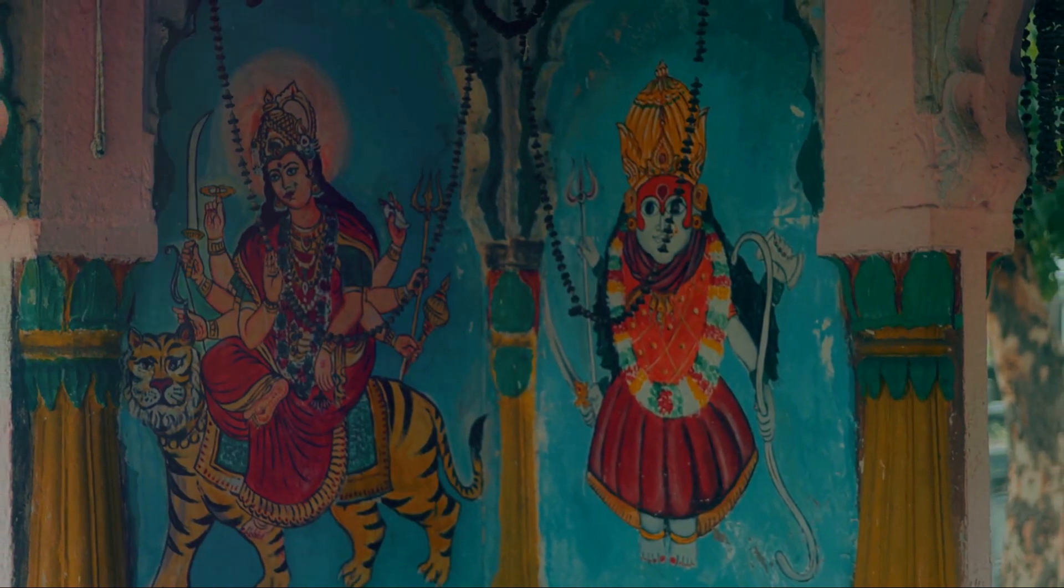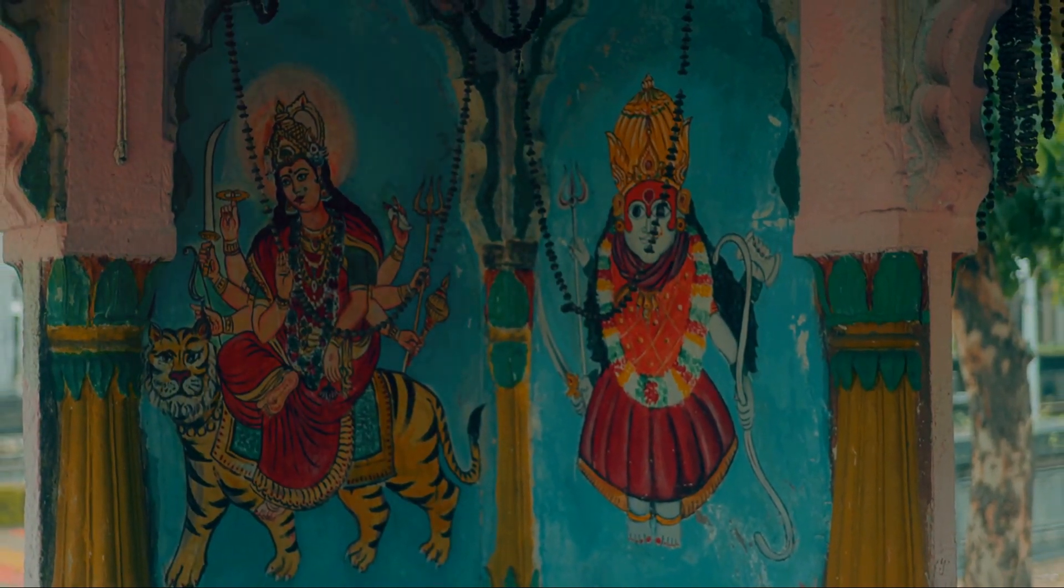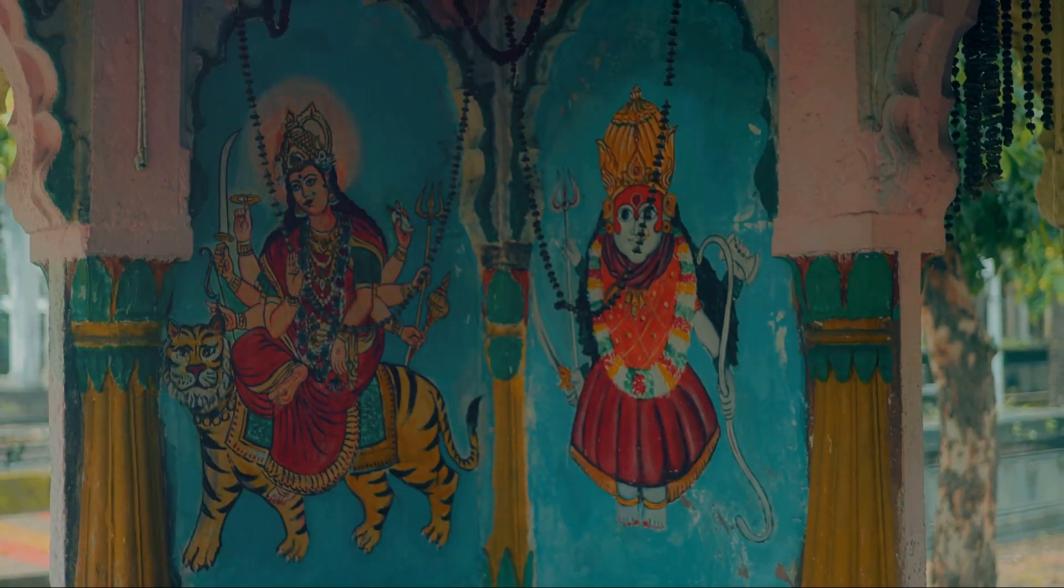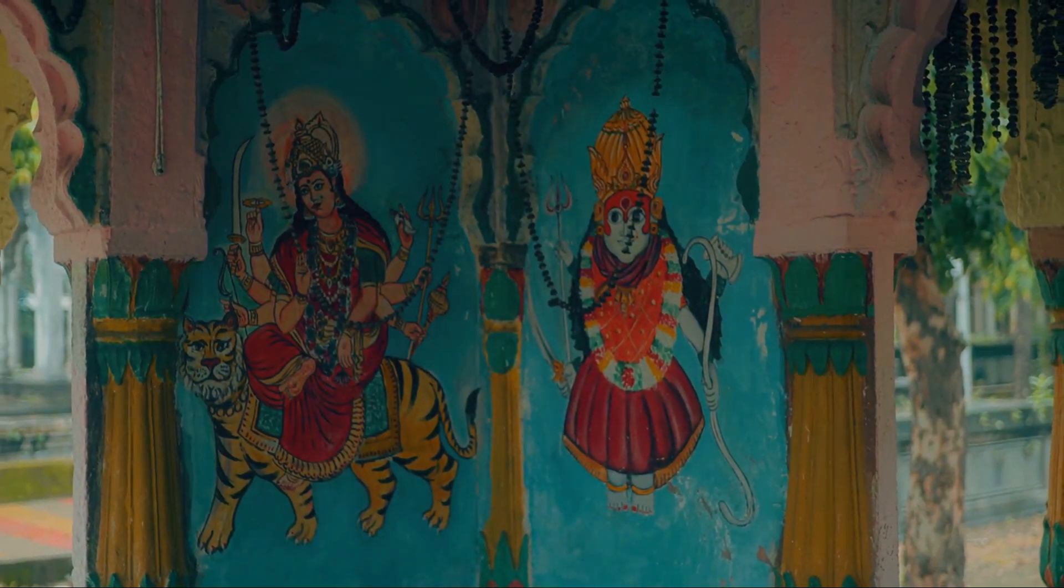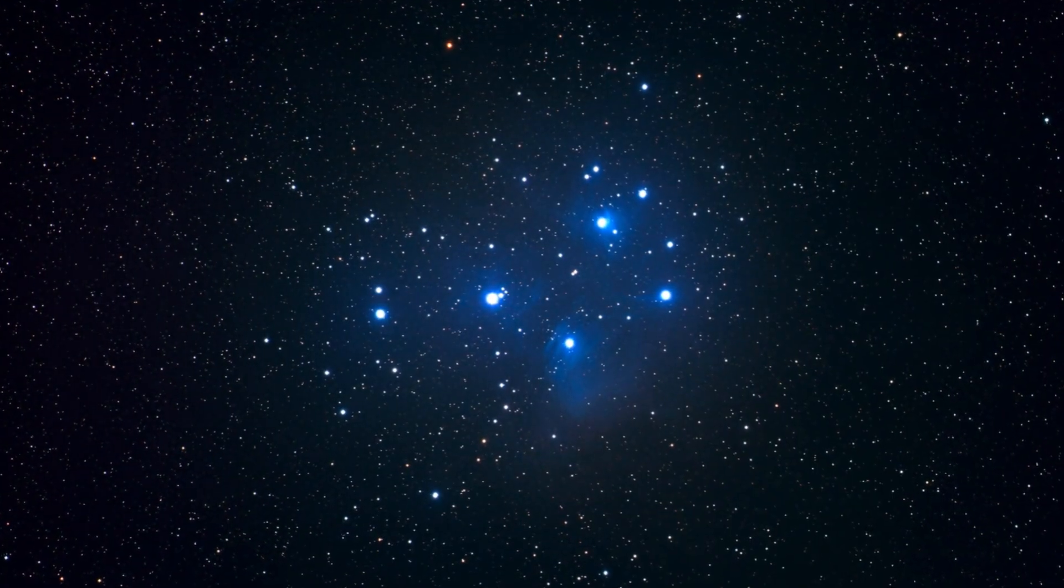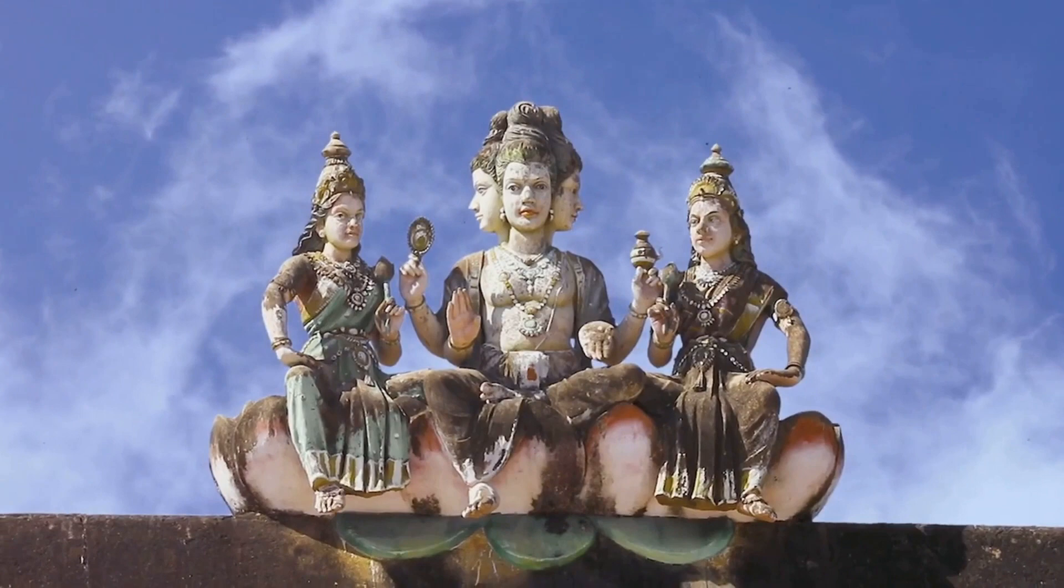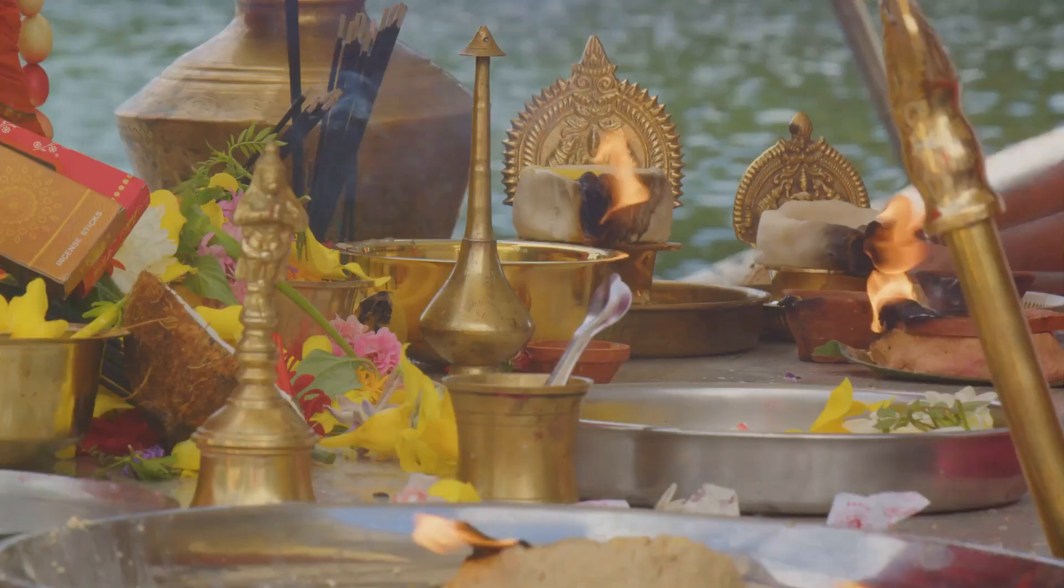These celestial women, known as the Kritikas, found the infant Kartikeya in a forest and nurtured him, each contributing to his upbringing. This mythological association underscores the nurturing and protective nature of the Pleiades in Hindu tradition.